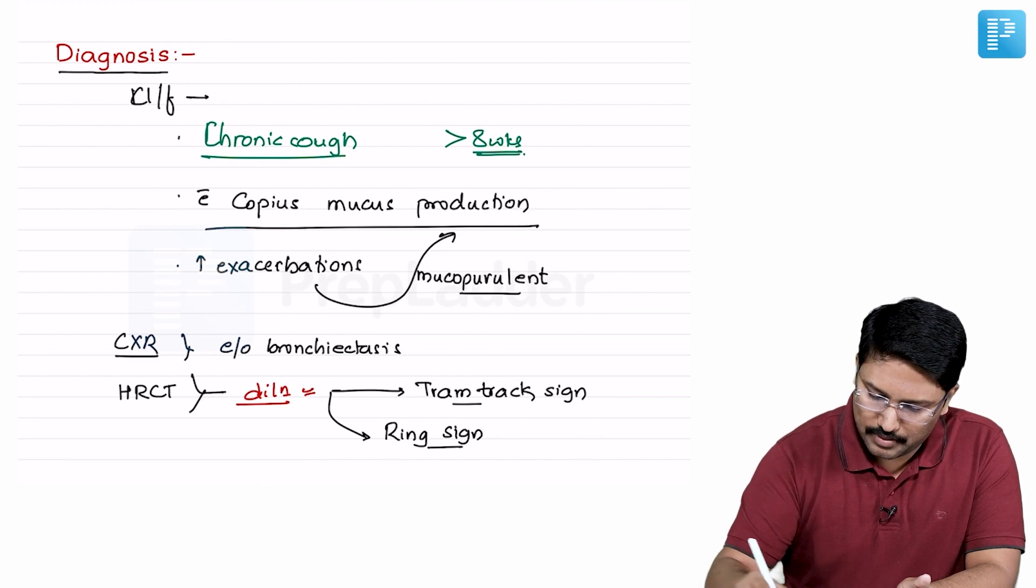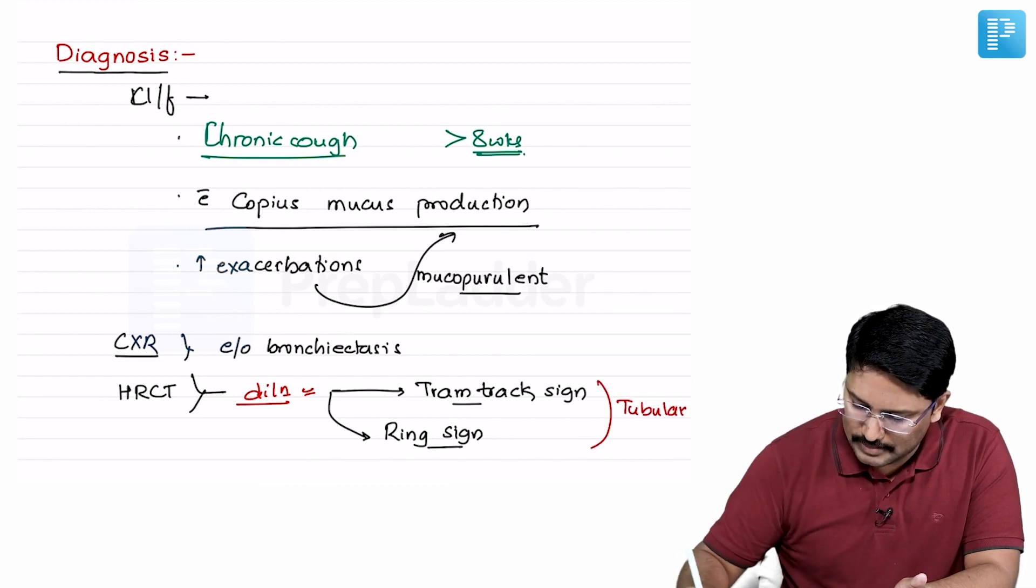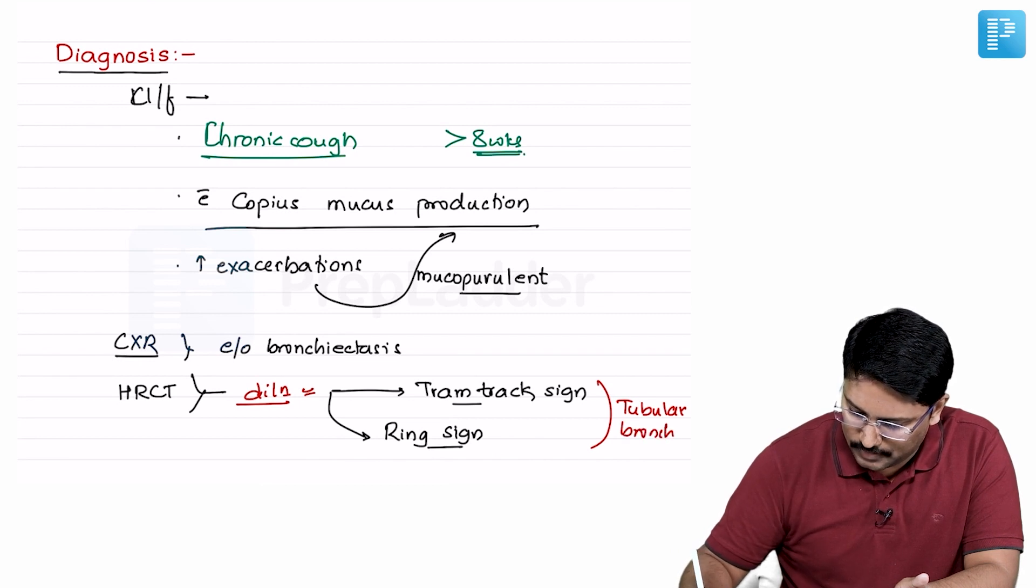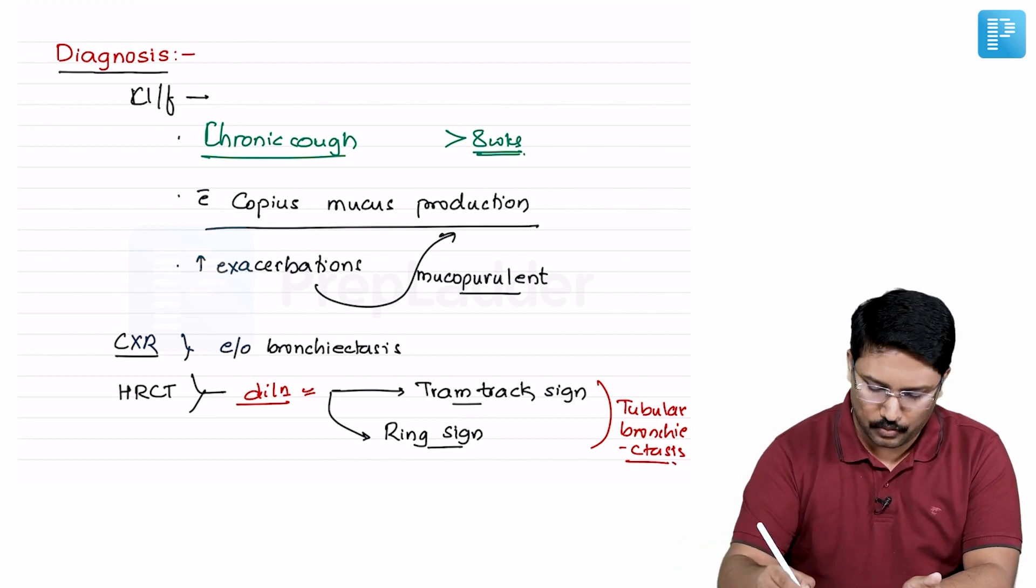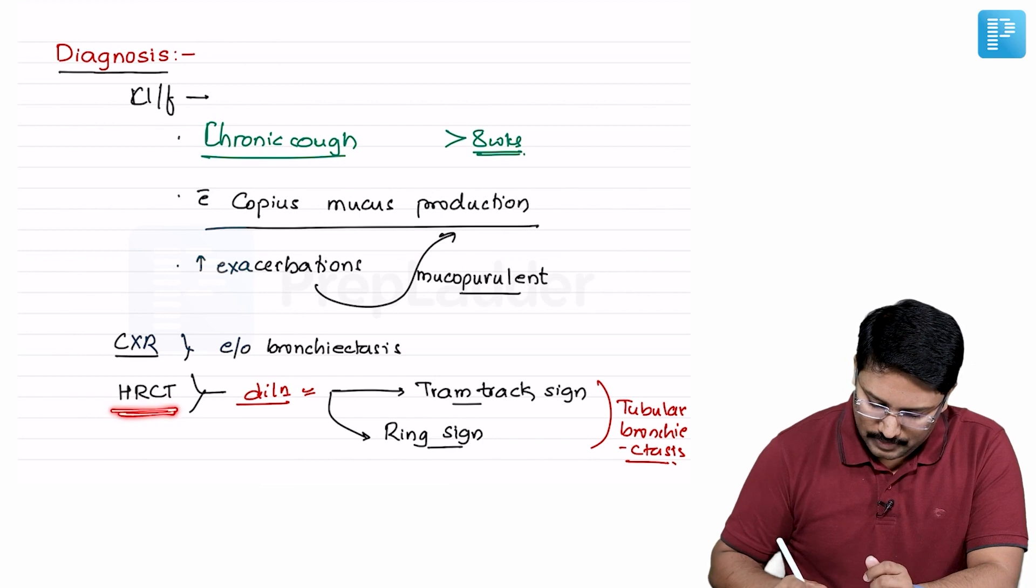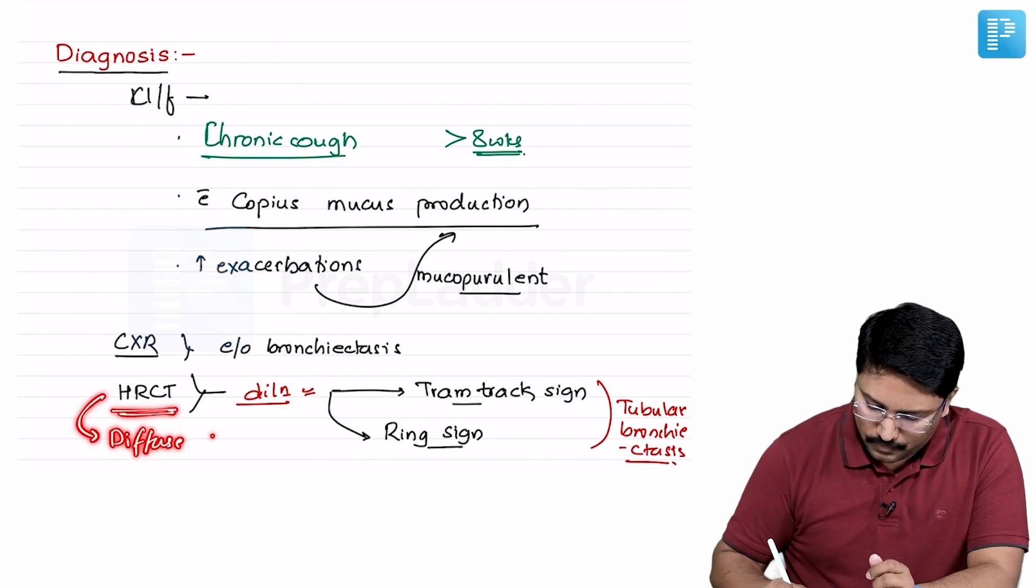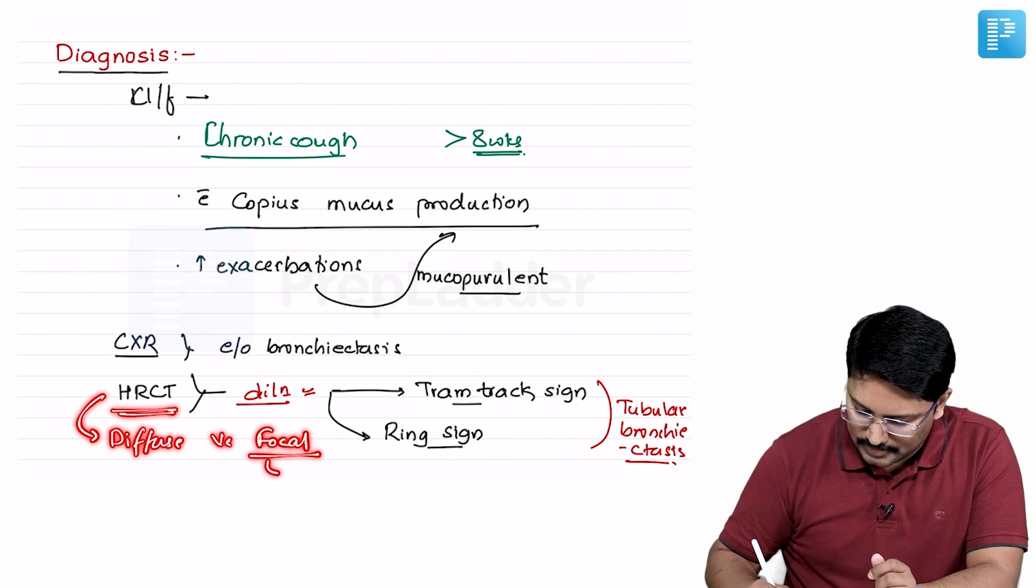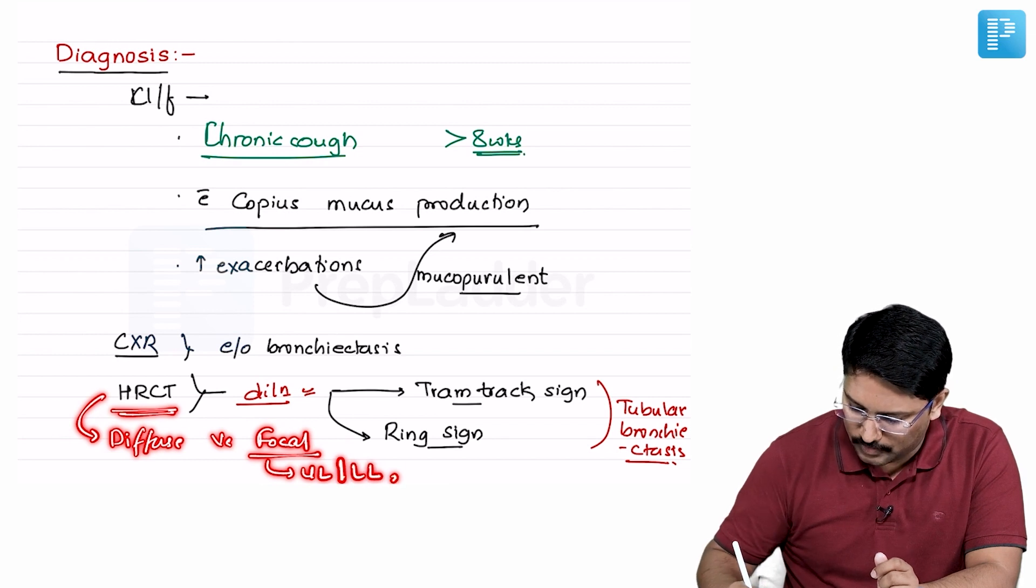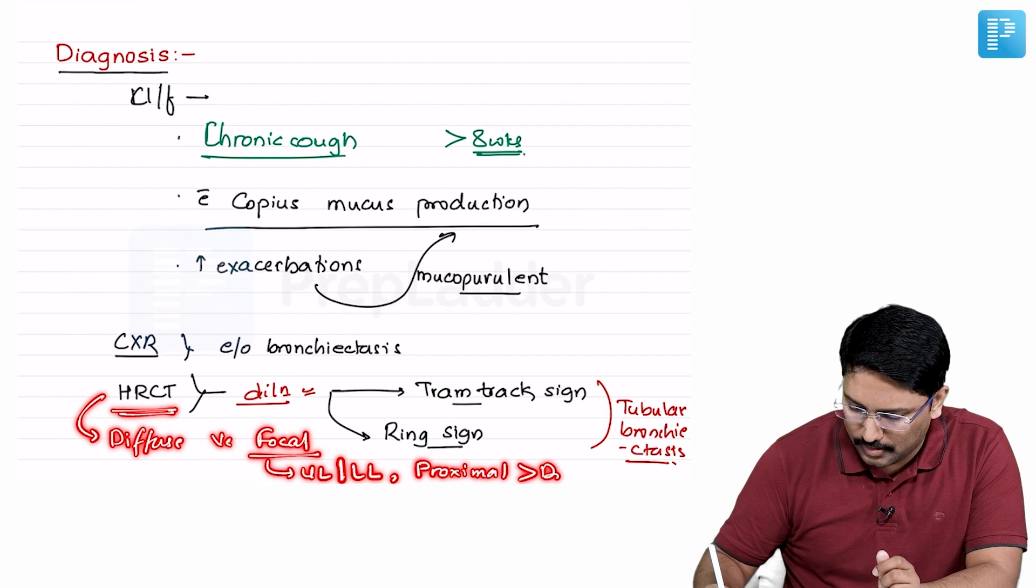In other cases you will see the varicose nature of the bronchiectasis or the cystic nature of the bronchiectasis. Now what additional information HRCT will tell you is whether it is diffuse versus focal, and if it is focal whether it is affecting upper lobes more or lower lobes more, and it will also tell whether it is proximal more or distal more.